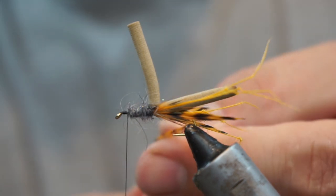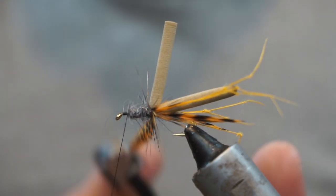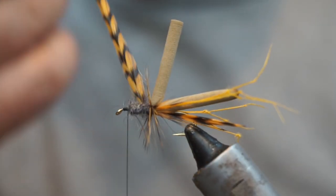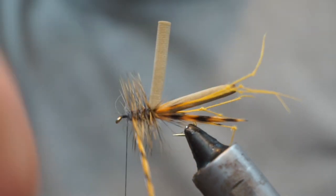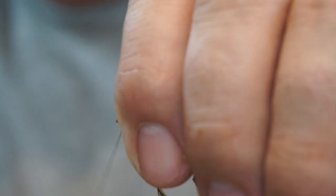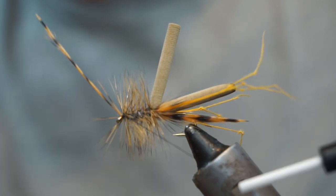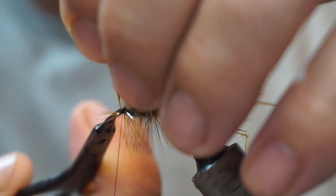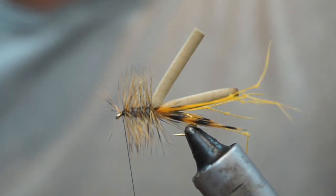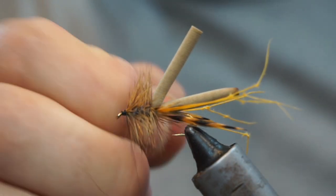We now take our hackle pliers. Ordinarily you'd rib this but because it's going to have the thorax cover that will hold the turns of hackle in place, it's not necessary to rib it. I'm just going to travel forward through this thorax that I've made. It depends how buoyant or bushy you want the fly to be. I'm going to get to the front here and take several wraps of my hackle and then tie it in, trim it off. Take my thumb and forefinger and stroke everything back and get a few turns in there to hold the hackle back.